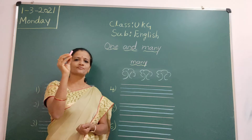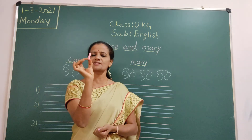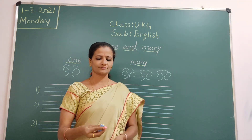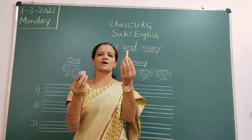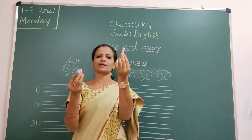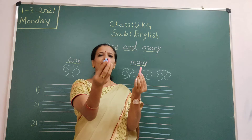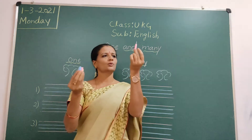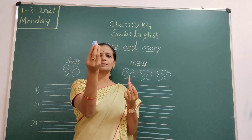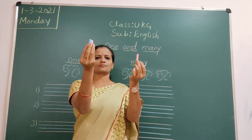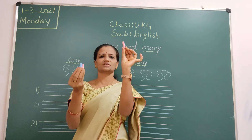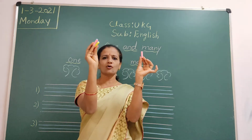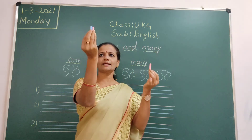So what is this? Chalk piece. How many chalk pieces are there in my hand? One. See children, this is one chalk piece in my hand. In the other hand — many chalk pieces. Many means more. One chalk piece in this hand, four chalk pieces in this hand. One and many.